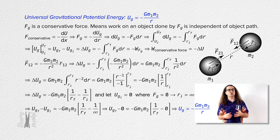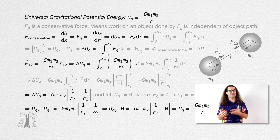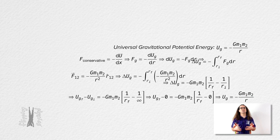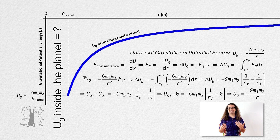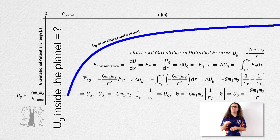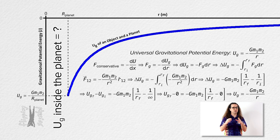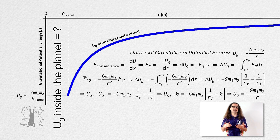Previously, we showed that the universal gravitational potential energy between an object and the Earth, or any planet for that matter, looks like this. However, we never determined the universal gravitational potential energy if the object moves inside the planet. If you are interested in taking a detailed look at the force of gravity and gravitational potential energy which exists between an object and a planet, all the way from the center of the planet to infinitely far away, we will go over that in a future lesson. The link should have just appeared and is also in the video description.